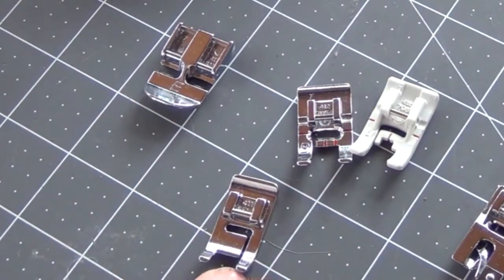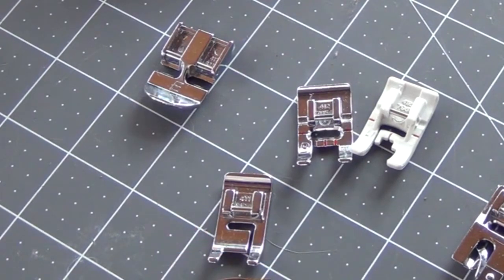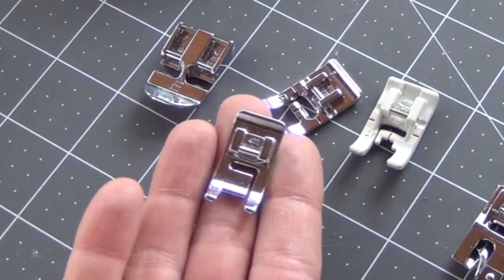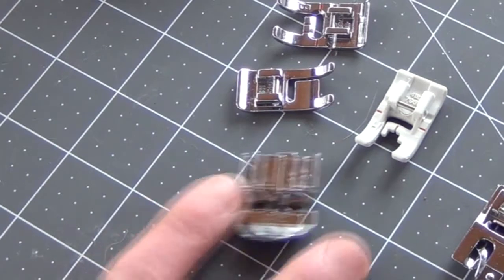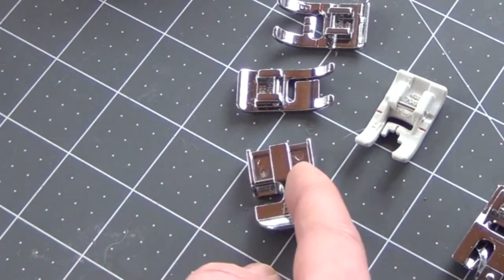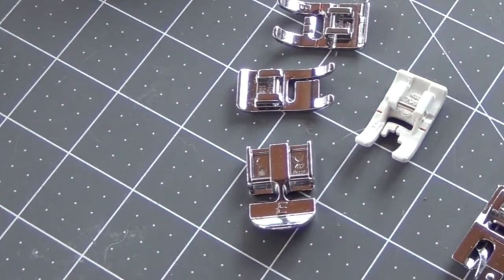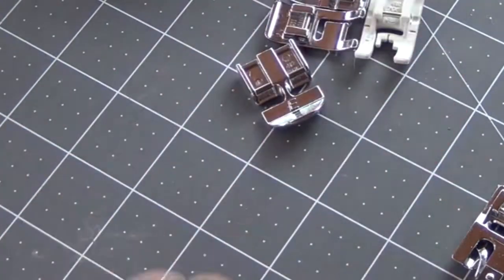This is a quarter inch seam allowance foot. From the needle to the edge is a quarter of an inch. It's really convenient if you're sewing with a quarter inch seam allowance. This is my zipper foot which I can move so that I can have the zipper on either side of the needle with this particular design. Every machine and brand is going to have a different zipper foot.